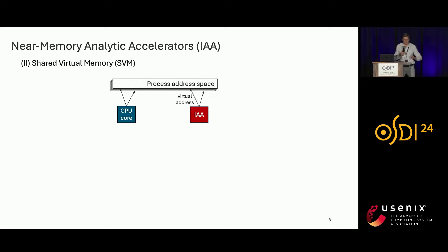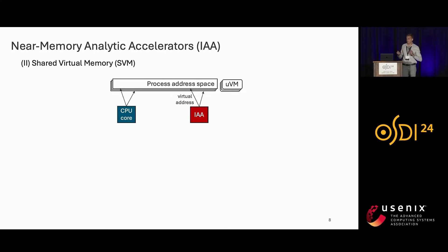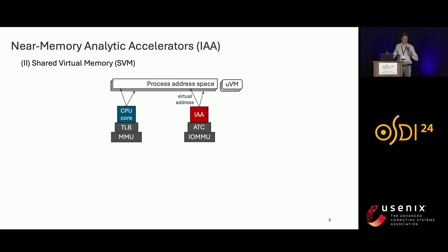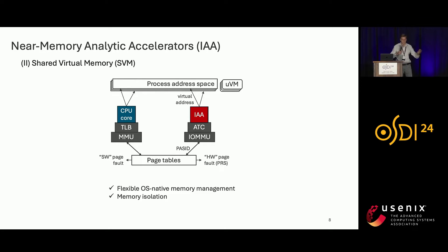Another feature is that IAA supports the shared virtual memory (SVM) programming model, and similarly to CPUs, it can access process address spaces using virtual addresses. This is important for our use case, as each micro VM runs its own process and relies on OS-native memory management for security and scalability. The accelerator uses IOMMU with address translation caches, can request host kernel page tables, and initiates hardware page faults through the page request service mechanism, enabling flexible OS-native memory management and memory isolation.